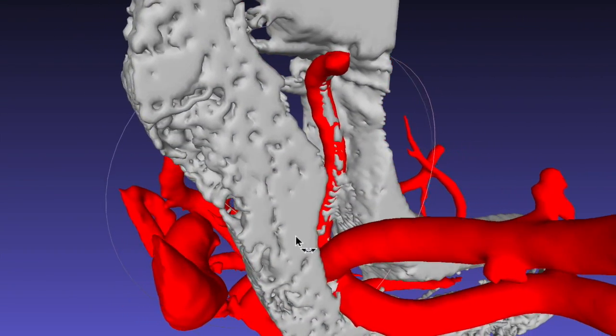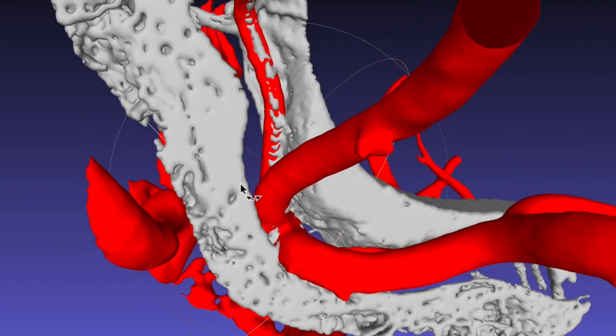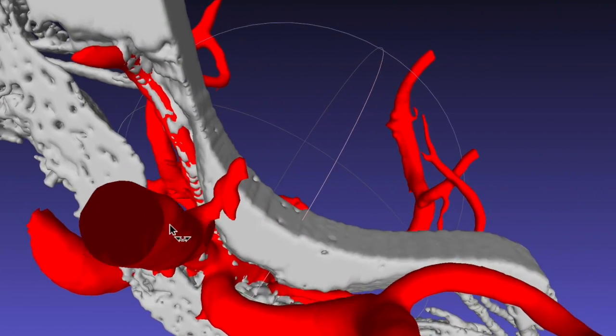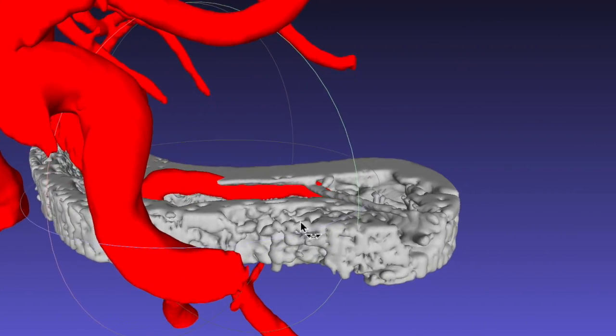These images show the compression of the attached segment of the left facial nerve in a patient with left hemifacial spasm. Note that the cisternal portion of the nerve is not compressed.